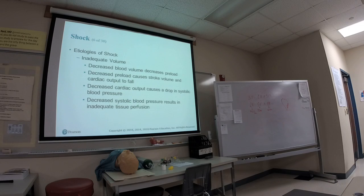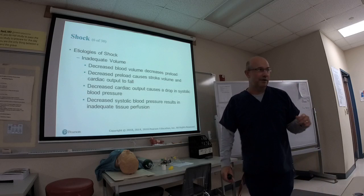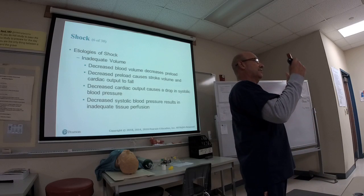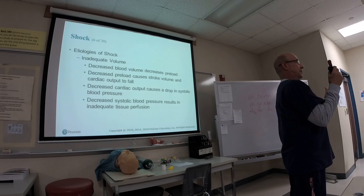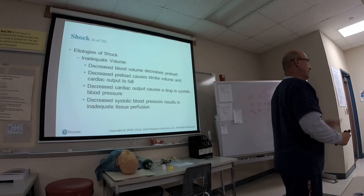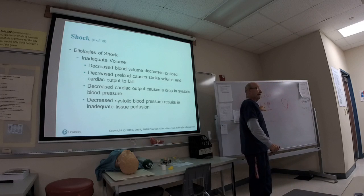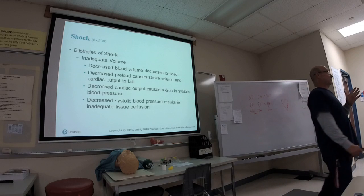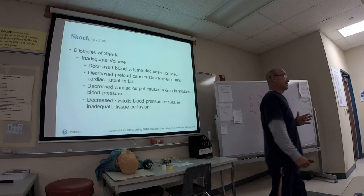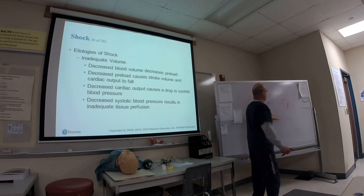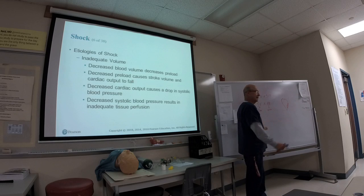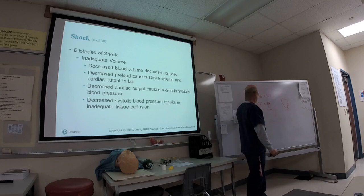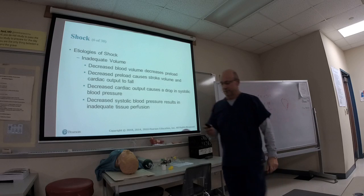Stroke volume is the amount of blood ejected from each ventricle with a contraction — we focus on the left ventricle. The average stroke volume is 70 milliliters, and normal adult heart rate is 60 to 100. Remember this formula — cardiac output, stroke volume, and heart rate — it will be important on the exam.